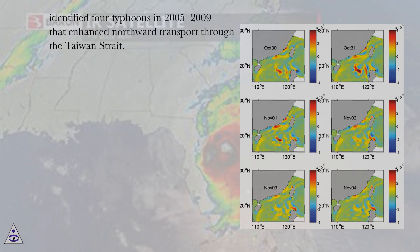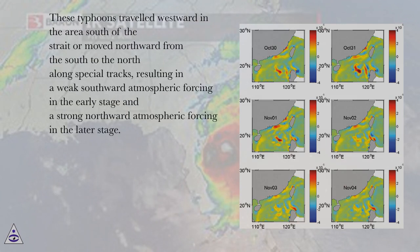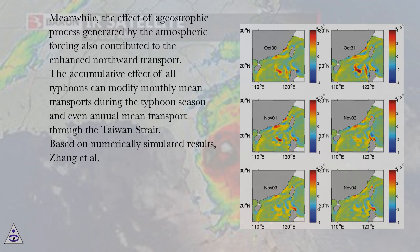Zhang et al. identified four typhoons in 2005–2009 that enhanced northward transport through the Taiwan Strait. These typhoons traveled westward in the area south of the strait or moved northward from south to north along special tracks, resulting in weak southward atmospheric forcing in the early stage and strong northward atmospheric forcing in the later stage. Meanwhile, the effect of a geostrophic process generated by the atmospheric forcing also contributed to the enhanced northward transport. The accumulative effect of all typhoons can modify monthly mean transports during the typhoon season and even annual mean transport through the Taiwan Strait.